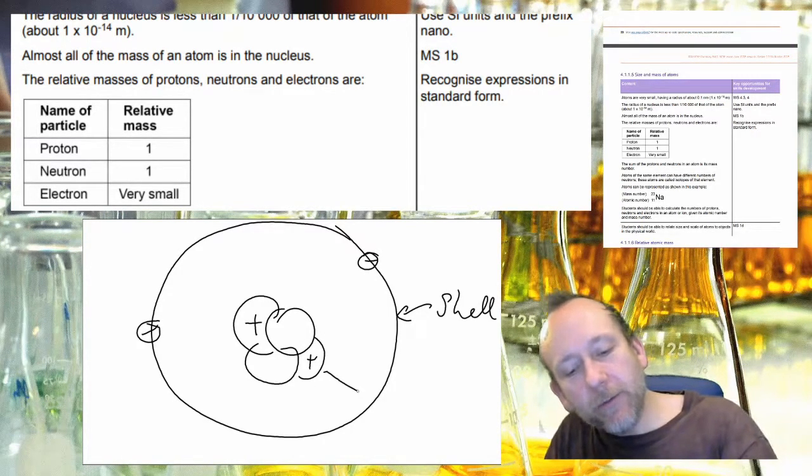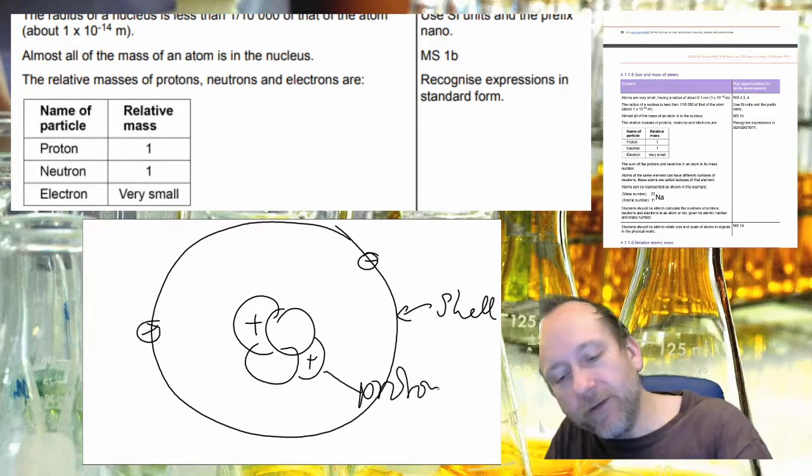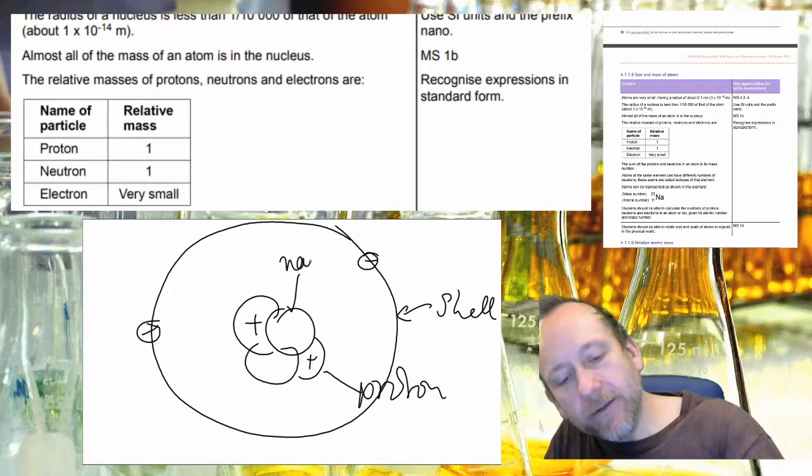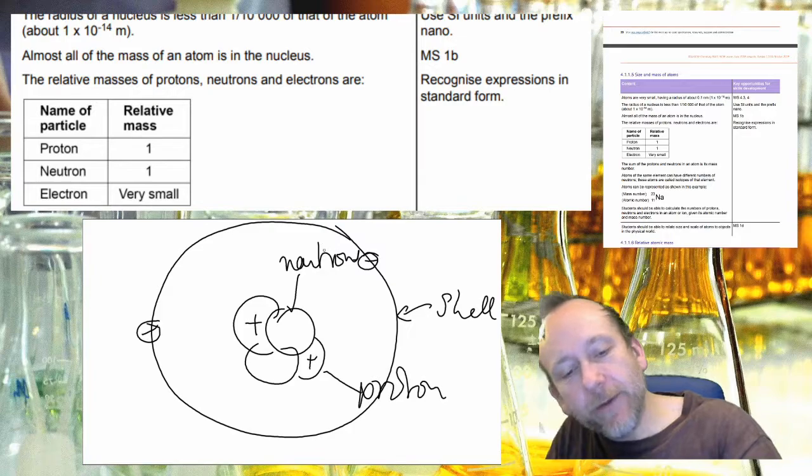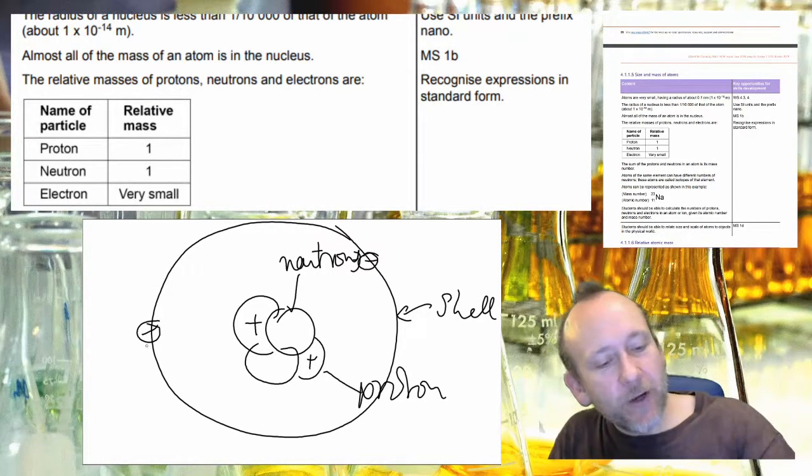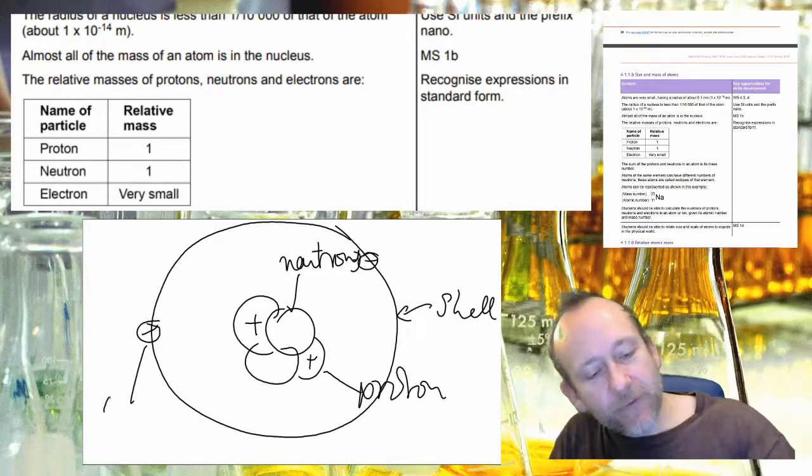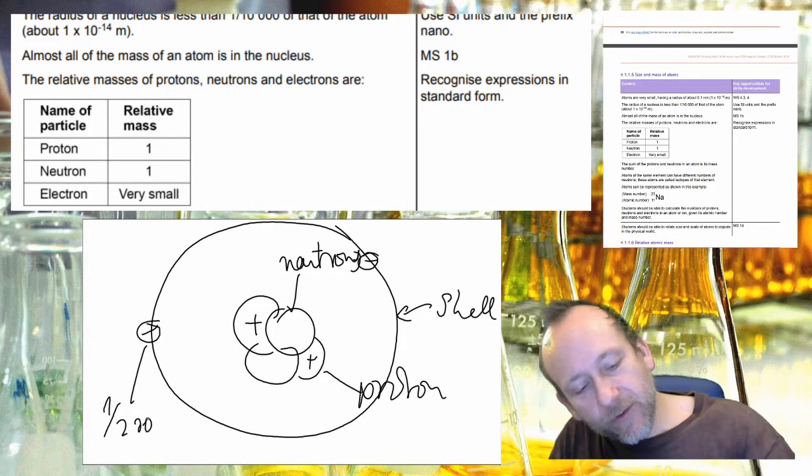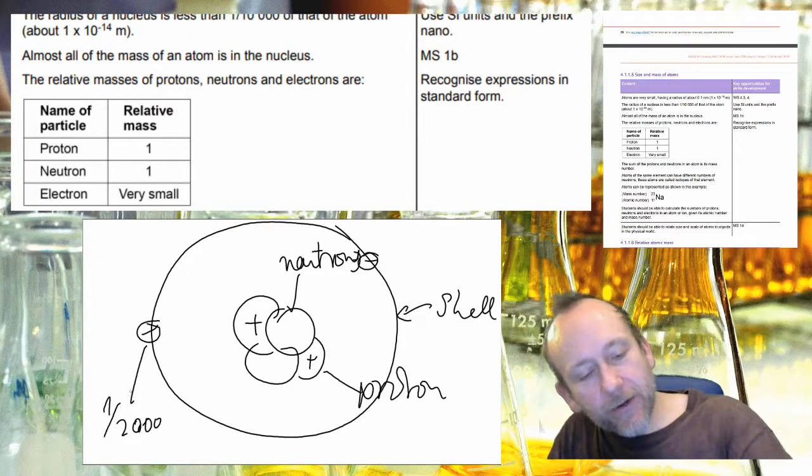So that's the shell and then we've got protons—they are the positively charged particles—and neutrons, and they have got about the same sort of mass.